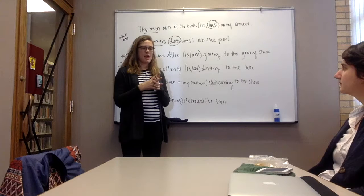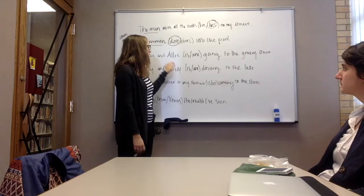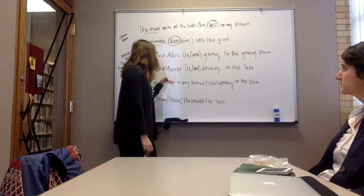Great job. So, next, we are going to move on to sentences that have more than one subject. When a sentence has two subjects and it's joined by and, it is a plural subject.